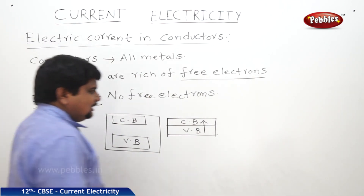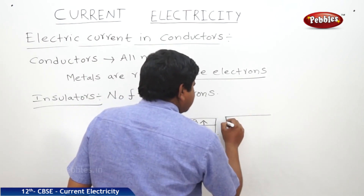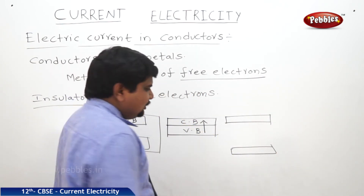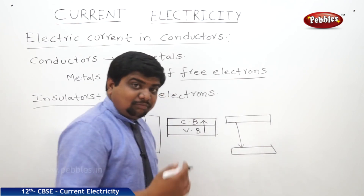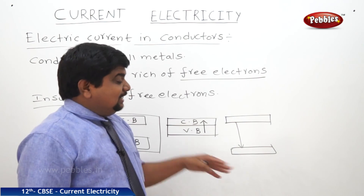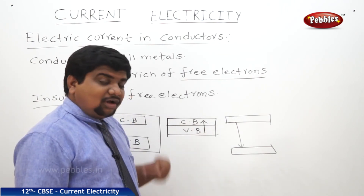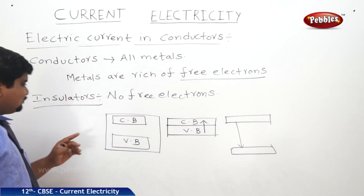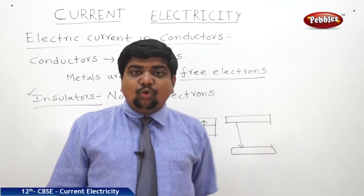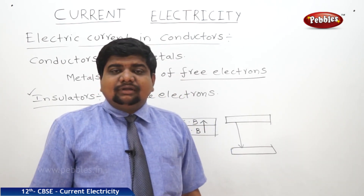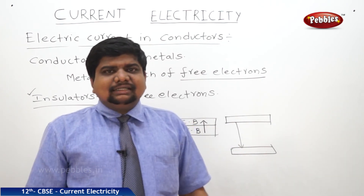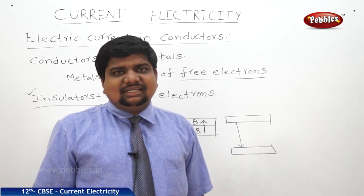In the case of insulators, there is a large gap between the conduction band and valency band. The required energy is much more than what is normally available for an electron to jump from the valency band to the conduction band. If that energy is not supplied, it is not possible to conduct current. That is why at all temperatures these materials behave as insulators. Best examples are wood, plastic, and rubber.